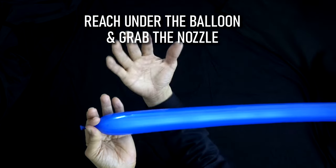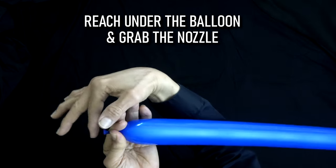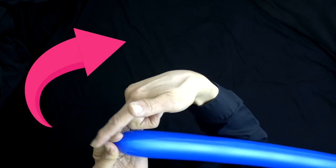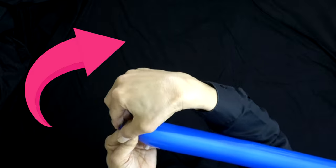Now watch my right hand, it goes underneath, it grabs the nozzle and then it loops around these two fingers and underneath.